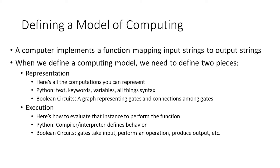We're going to see for every single model of computation that we have these two components, just like we had with Python. When we look at Boolean circuits, we're going to see that we have a representation, which is essentially a graph where the nodes are going to be gates and the edges are going to be wires connecting those gates. And then we're going to have an execution model for how those gates evaluate their inputs and provide outputs for other gates.